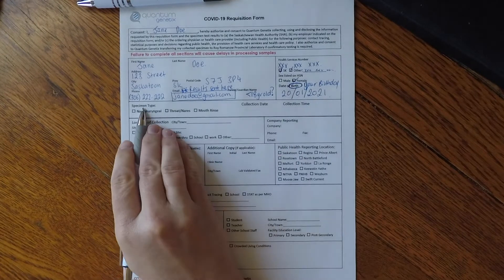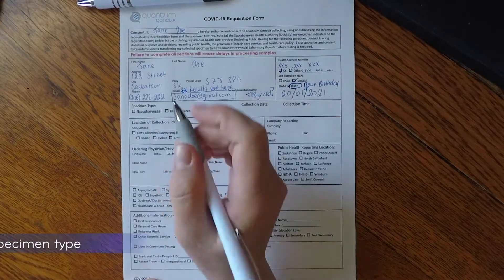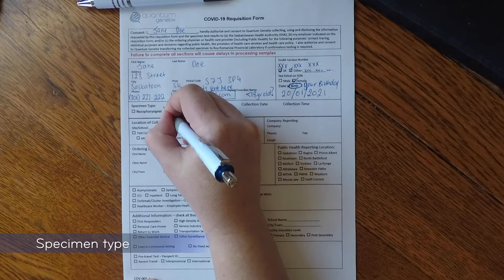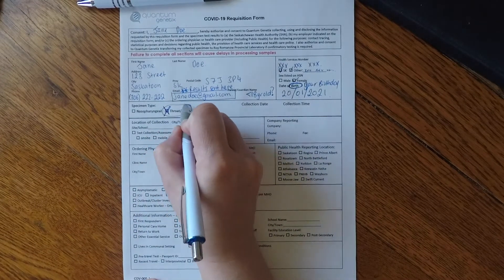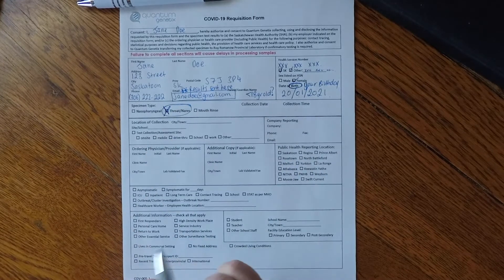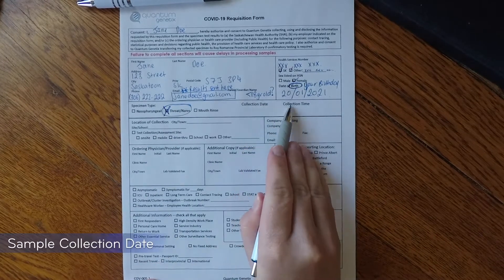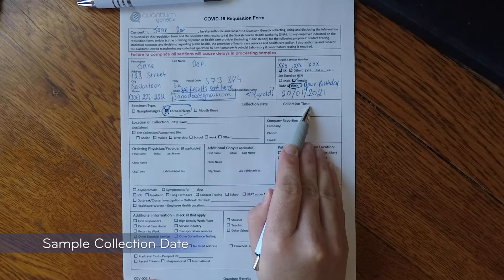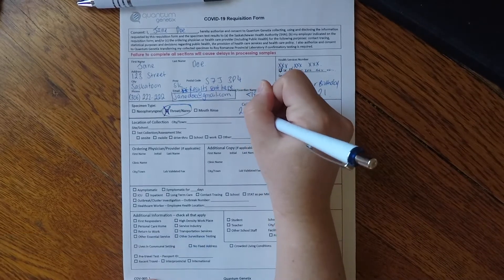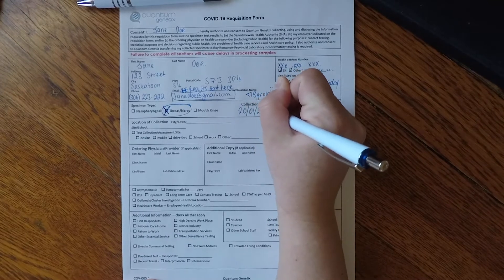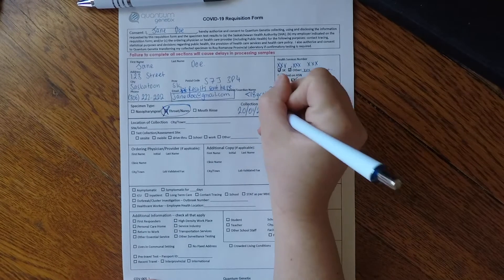Now check the box for the specimen type. The specimen that Quantum Genetics collects with their self-assessment kit is the throat and nares. When you are taking your swab please note the collection date and collection time. This is essential as it will also be printed on your results.